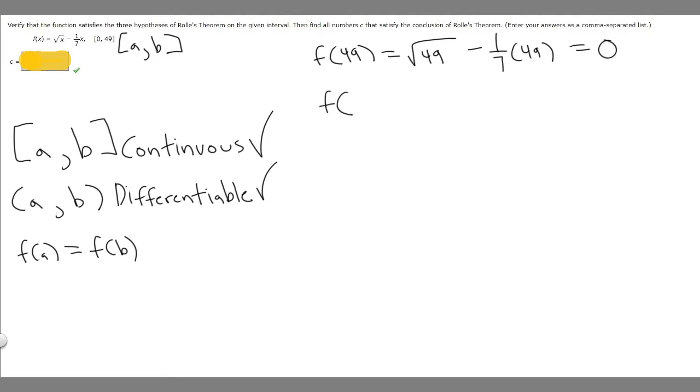And then that means in order for this to work when we plug in 0 it has to give us 0 too. So we have the square root of 0 minus 1 over 7 times 0. So the square root of 0 is just 0 minus 1 over 7 times 0 is 0. And then that means f(a) is going to be equal to f(b). They're both going to be 0. So all three of our hypotheses check out.